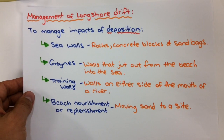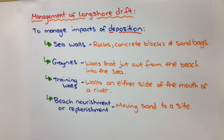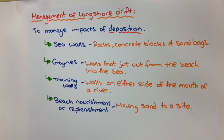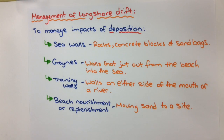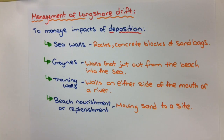The management processes in place to minimize the impact of longshore drift include sea walls, which are made up of rocks, concrete blocks, and sandbags. There are also groins, which are walls that jut out from the beach into the sea, training walls, and beach nourishment or replenishment projects, which transport sand from a site where it's been deposited to a place where it's been eroded, to build the sand of that coastal landscape back up again.